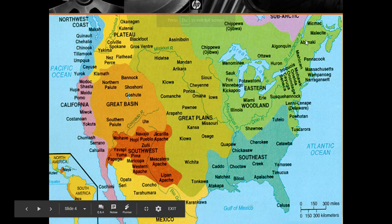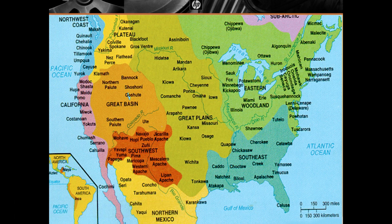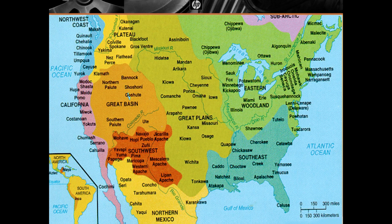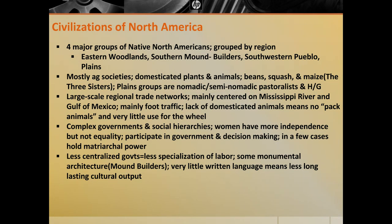I want to start this unit by taking a look at the Native American civilizations in North America. From the map here, the North American civilizations are divided into roughly four different types, with numerous tribes spread across the entirety of North America. The four major societies in Native North America in the 14th and 15th centuries are generally grouped by region: eastern woodland societies, southern mound builder societies, southwestern Pueblo societies, and the plains societies.